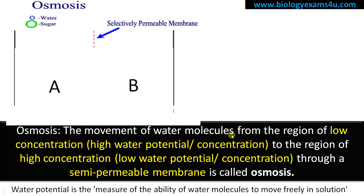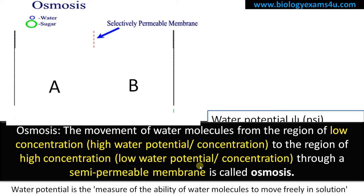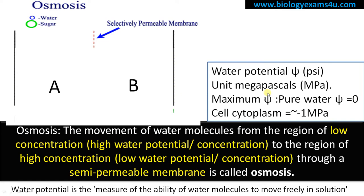Osmosis is a movement of water molecules from the region of low concentration — that is, high water potential — to the region of high concentration — that is, low water potential — through a semipermeable membrane. Water potential is denoted by the Greek letter psi and the unit is megapascal.